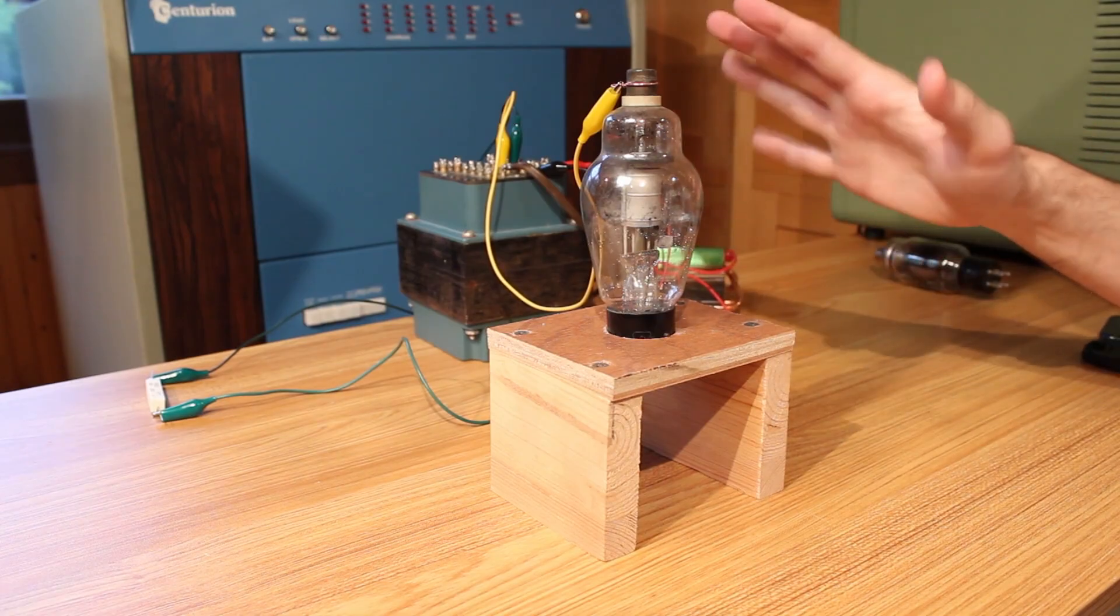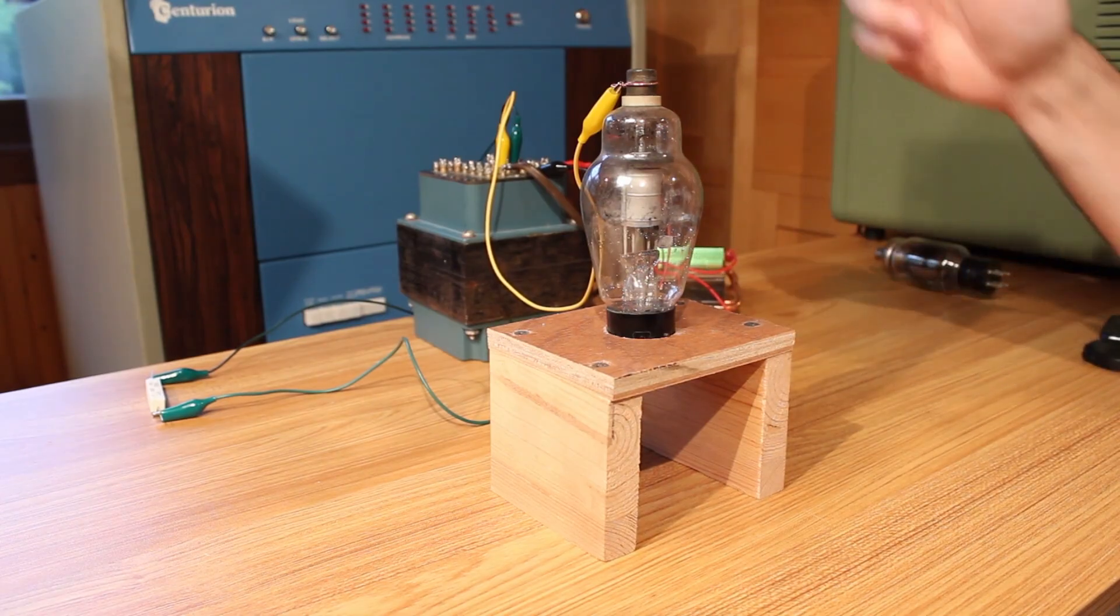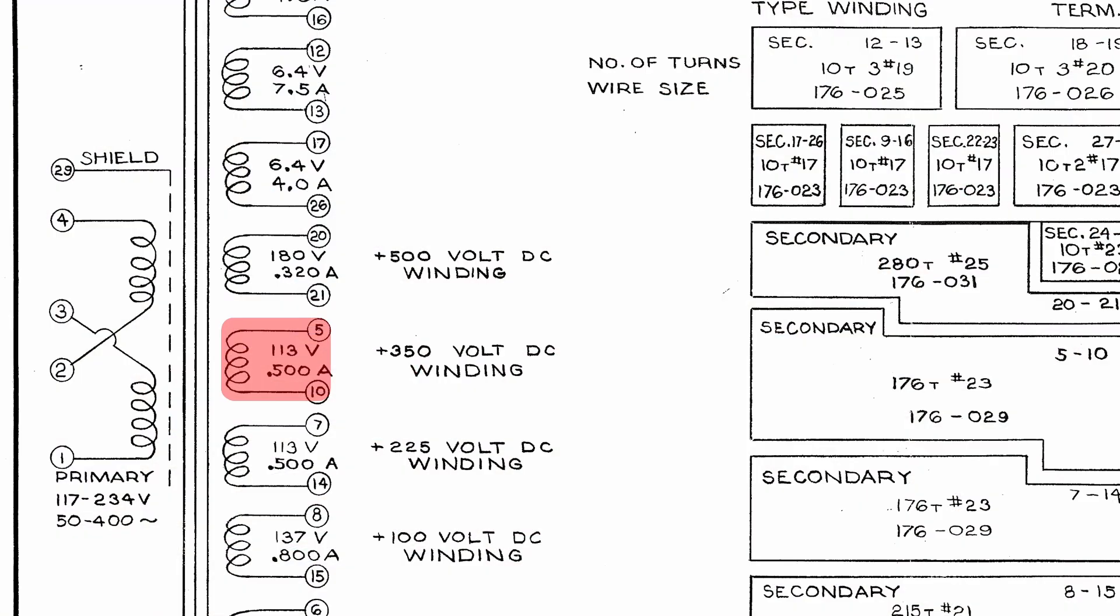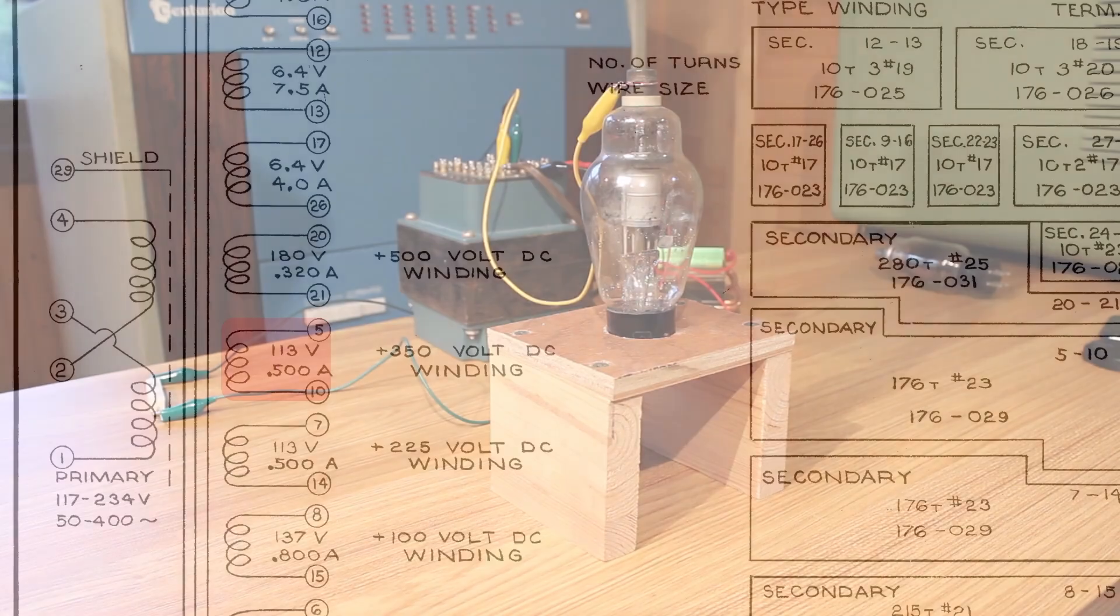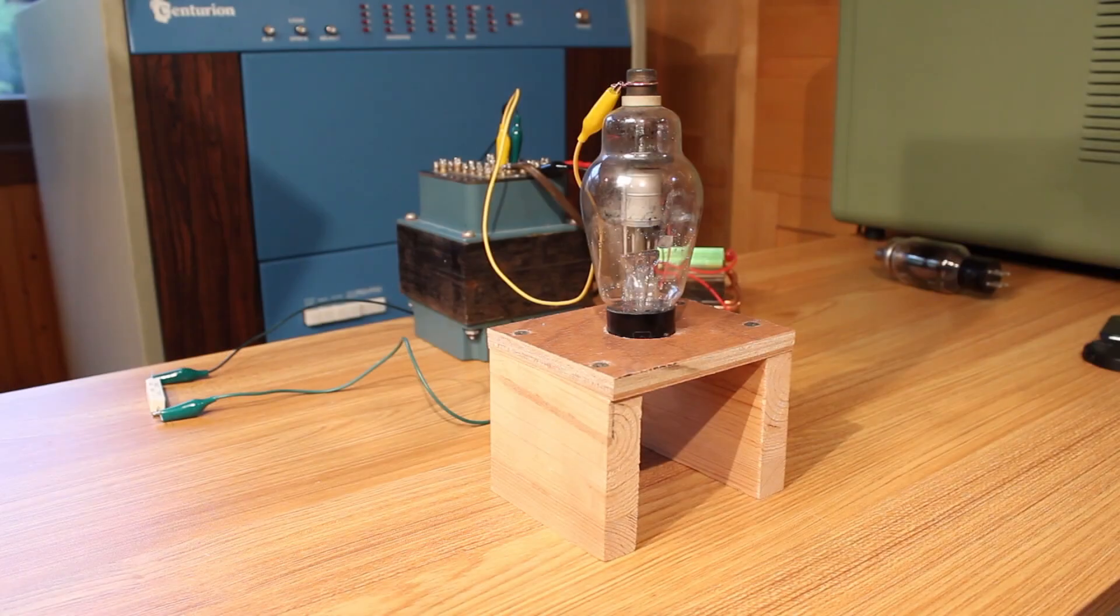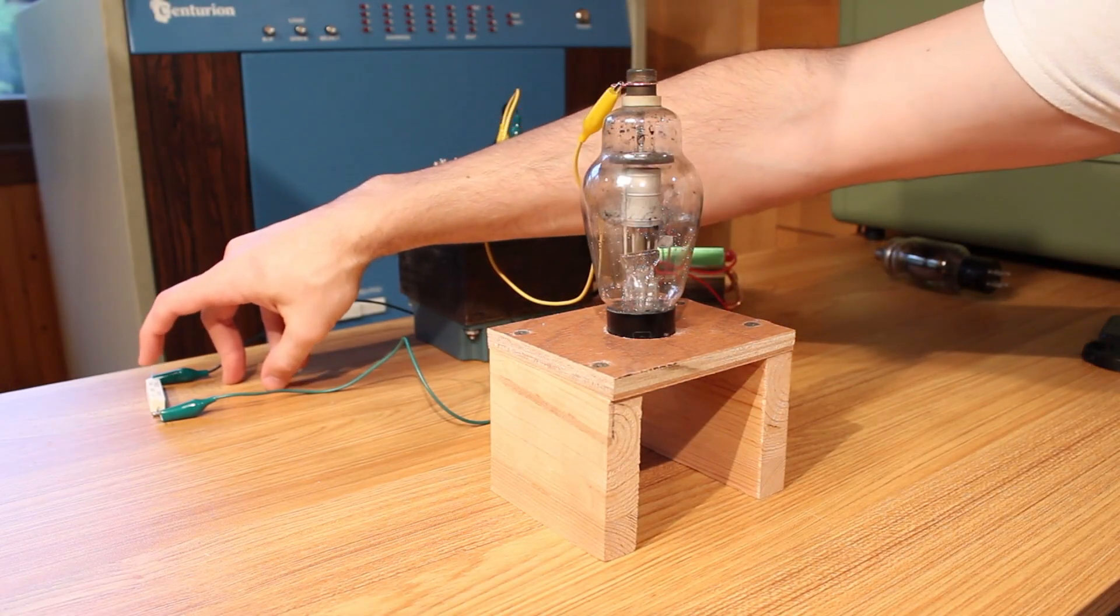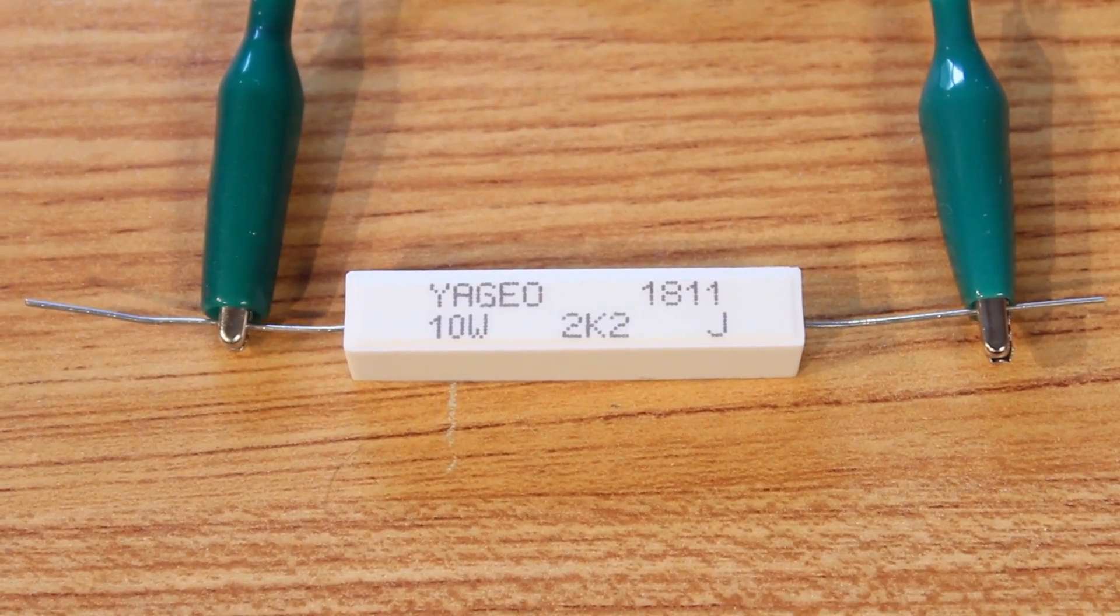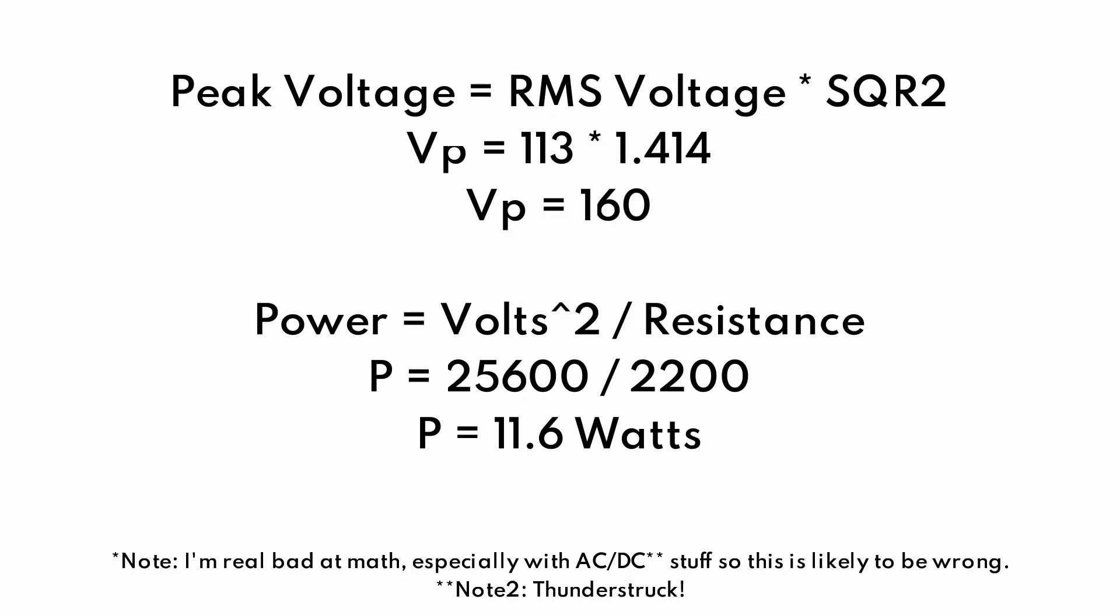Now coming into the anode I have 113 volts off of the 113 volt winding from the Tektronix transformer there. And then off of one leg of the filament, which is our cathode, we come out and we go to this 2200 ohm power resistor over here. This is only a 10 watt resistor and I think there's going to be about 13 or 14 watts going through it, so we won't run it for too long because it's probably going to get a little warm as well. And then that goes back to our transformer, and that should put enough of a load onto it that we can see it do its thing.